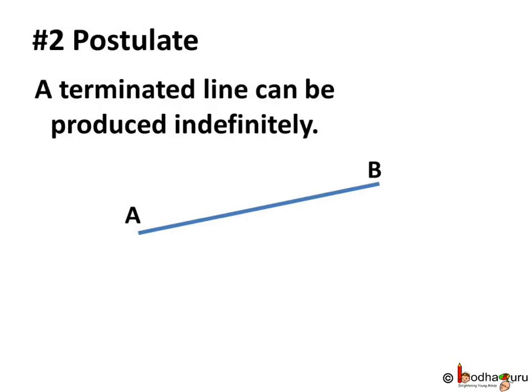His second postulate was a terminated line can be produced indefinitely. By a terminated line he meant a line segment. It means a line segment can be extended on either side indefinitely.